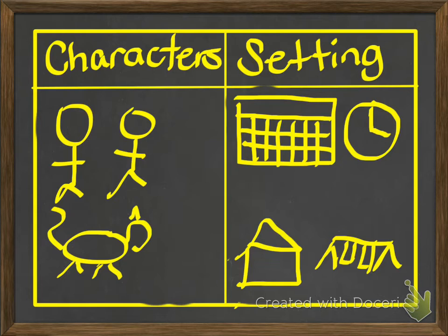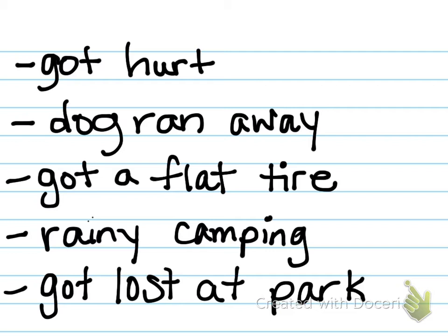Remember those two things, because your writing assignment today is going to be — first, you're gonna go back to your list that you made of your possible topics for your personal narrative. You're gonna pick out what you want to write about. Remember, it has to be something that happened to you. There has to be a problem and a solution. So you're gonna choose one topic out of your whole list.